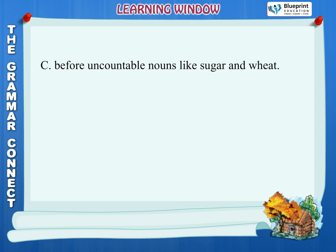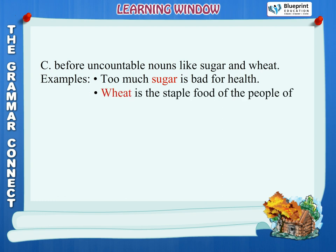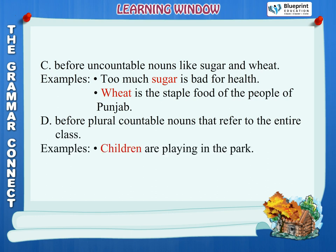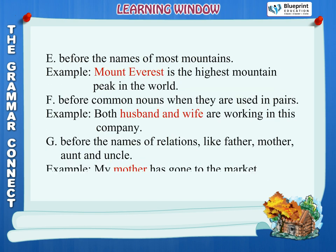Rule C: Before uncountable nouns like sugar and wheat. Examples: Too much sugar is bad for health. Wheat is the staple food of the people of Punjab. Rule D: Before plural countable nouns that refer to the entire class. Examples: Children are playing in the park. Tigers will soon become extinct.